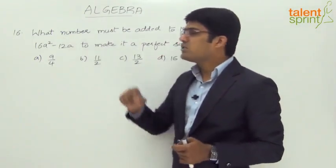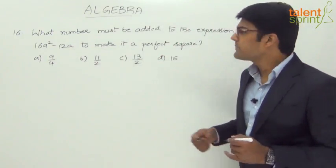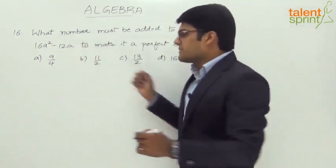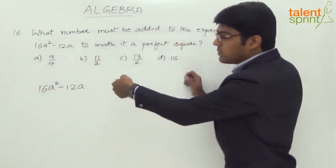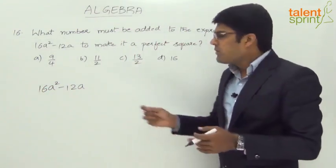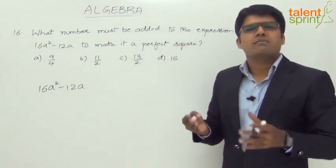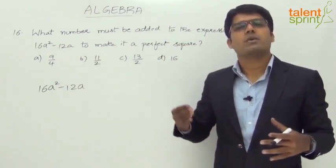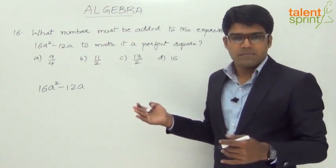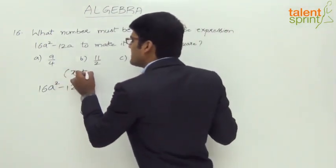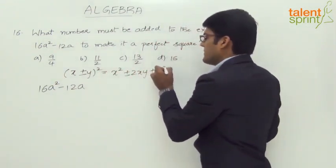Which of these numbers has to be added to this expression so that it becomes a perfect square? For such an expression to become a perfect square, it must be in the form of (x ± y)². We know (x+y)² = x² + 2xy + y², and (x-y)² = x² - 2xy + y². So we must express the given expression in that form.